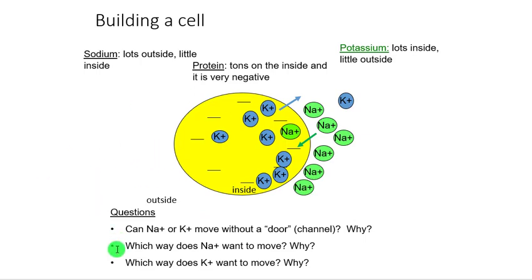Now let's look at whether sodium or potassium can move across the membrane without a door or channel, and why. This hinges on your understanding of the cell membrane. We've got a phospholipid bilayer with polar heads and non-polar tails — so this thick region is hydrophobic. Sodium is charged, and the moment it tries to enter this hydrophobic area, it just gets pushed out. So sodium cannot actually permeate through the cell membrane because of that hydrophobic nature.